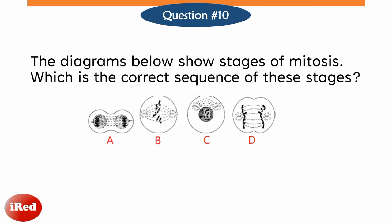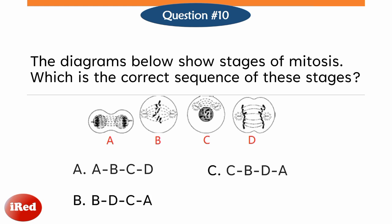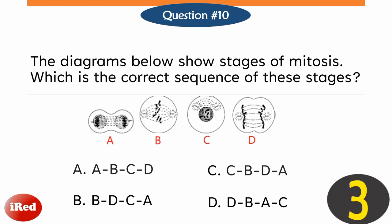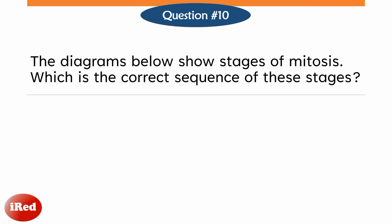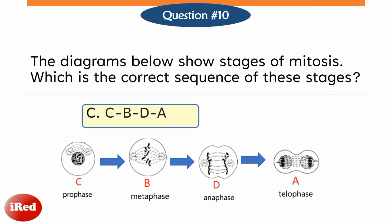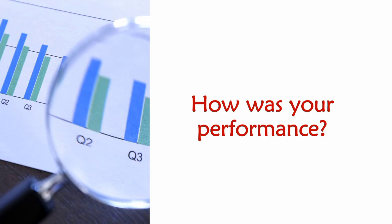Number 10. The diagrams below show stages of mitosis. Which is the correct sequence of these stages? The correct answer is letter C. The first stage of mitosis is prophase, then metaphase, next is anaphase, then followed by telophase.